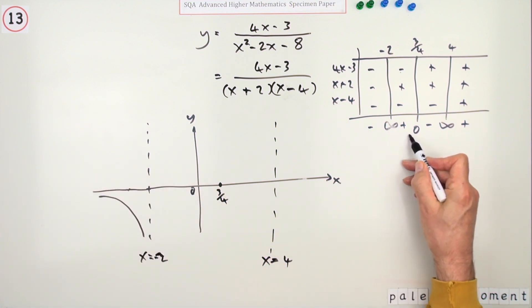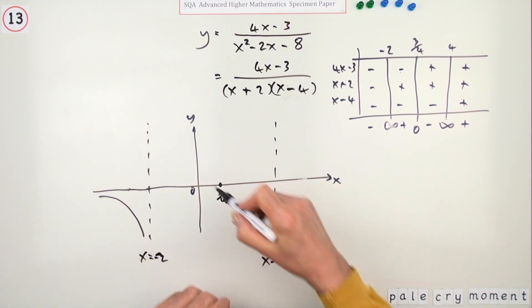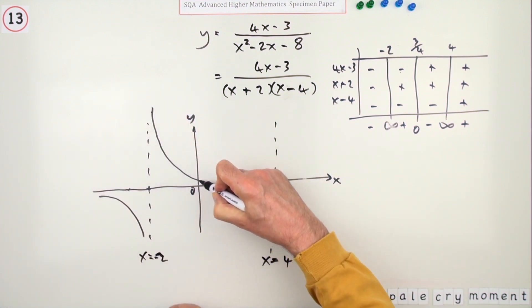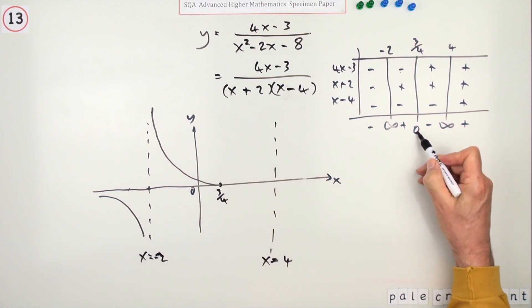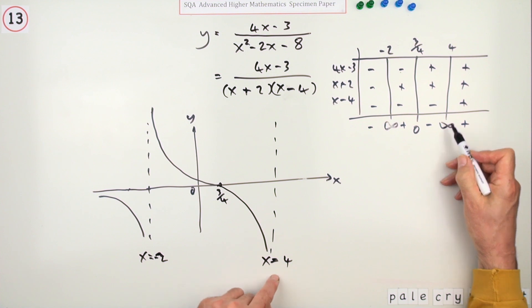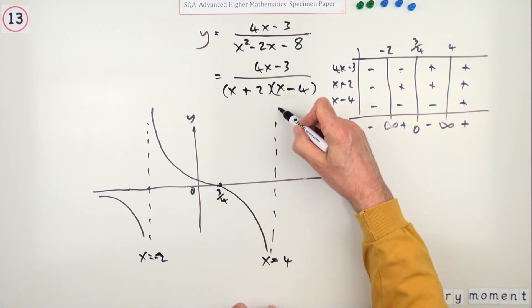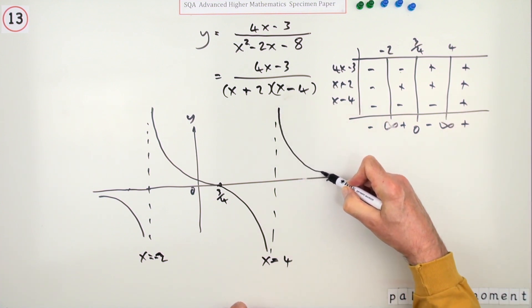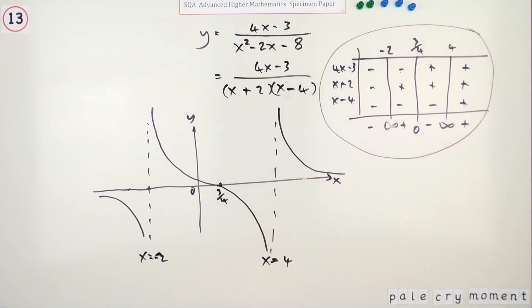Between them it's positive, so between there and the zero it's positive, so it must come down like this. After it, it goes negative, so it must go down like that. And then after 4 it's positive again, so it has to stay positive and stay above that asymptote. And that's a picture of the graph from what's called a table of signs.